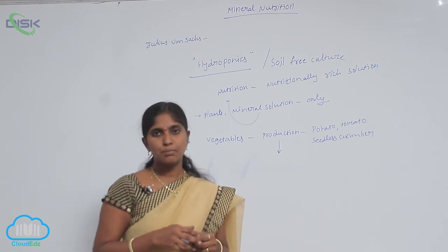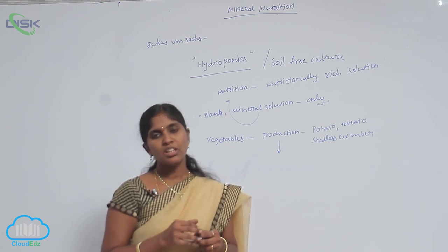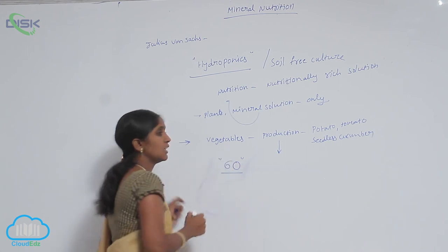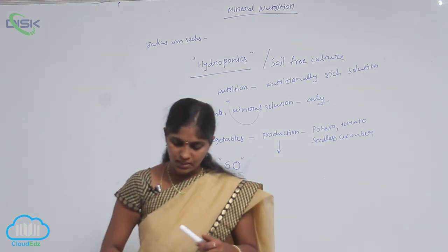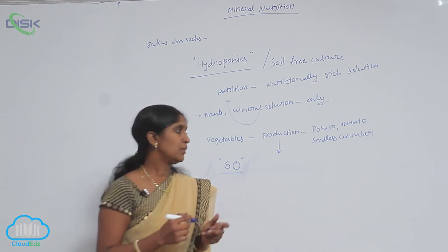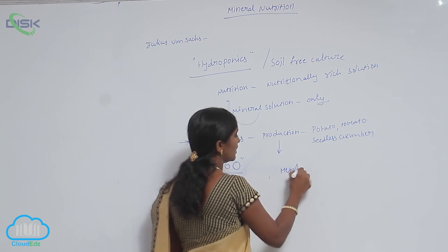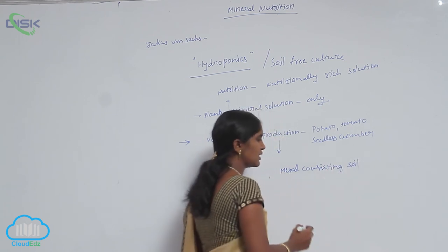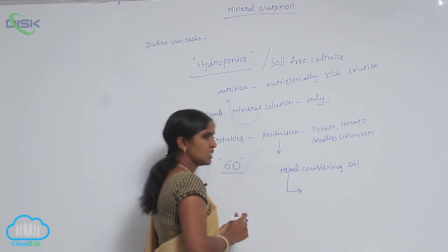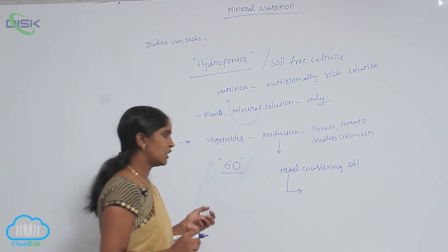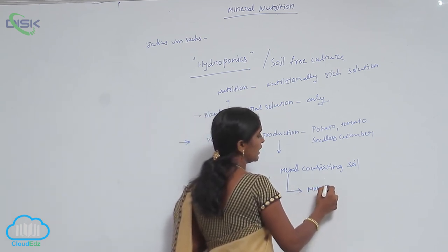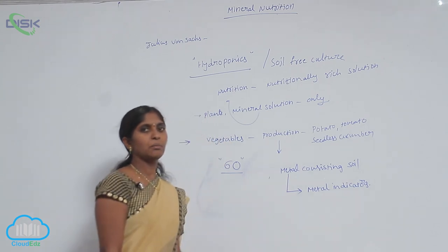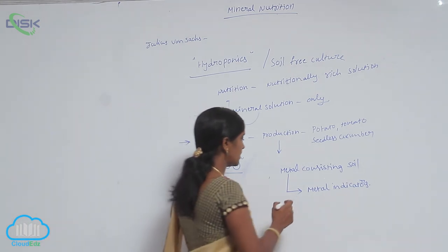Why does mineral study play an important role? In plants, approximately 60 types of elements are present. Some plants can grow in high metallic conditions — soils with high metal content. This means that plants which are resistant to high metal conditions act as metal indicators.